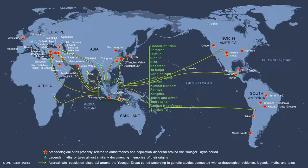From the legends, myths, and tales, Sundaland has many names, among others: Garden of Eden, Paradise, Dilmun, Nippur, Nisr, Nazursar, Tanatjer, Land of Punt, Land of Ophir, Atlantis, Kumari Kandam, Pandya, Kangdez, Tulan, Sawan, Taprobana, and Golden Chersonese.